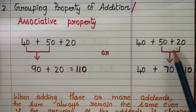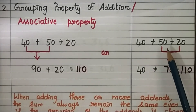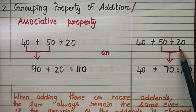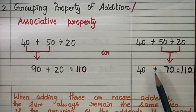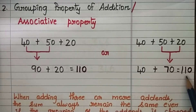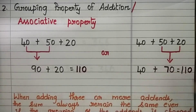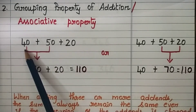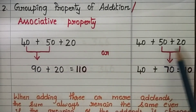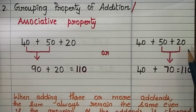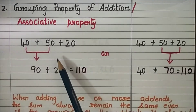Let us see another grouping. Here, we are adding the last two addends: 50 plus 20 gives 70. Then 70 is added with 40, and we get the final answer 110. Both answers are the same. In the first case, we added the first two addends; in the second case, we added the last two addends.